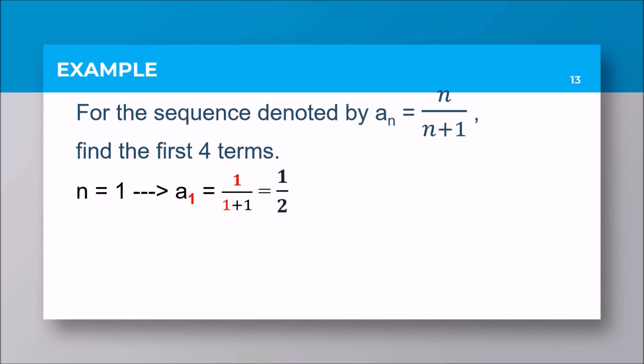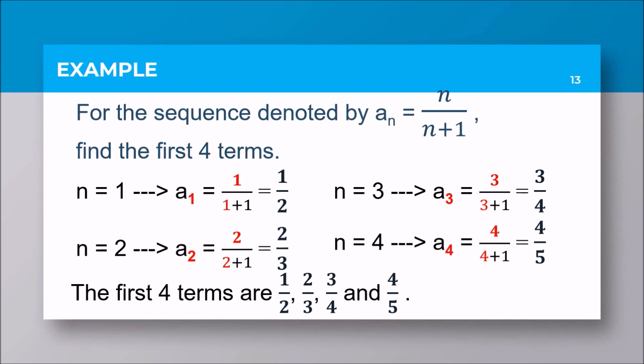I want you to pause the video and try to solve a sub 2 up to a sub 4. The answers are two thirds for our second term, three fourths for our third term, and four fifths for our fourth term. So therefore, the first four terms of the sequence a sub n equals n over n plus 1 are one half, two thirds, three fourths, and four fifths.